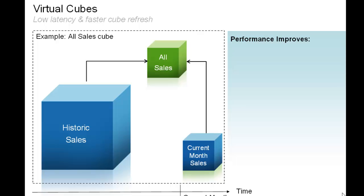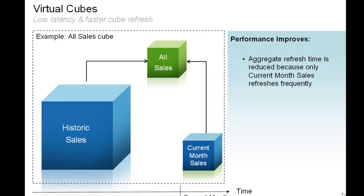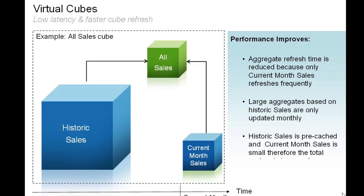Performance is improved because the aggregate refresh time is reduced — most nights only the small aggregates based on current month sales must be refreshed. If you have more granular updates, say every hour or less, you might not use aggregates on current month sales. Large aggregates based on historic sales are only updated monthly. Because query results from historical data are pre-cached and the recent data is small in size, performance for queries run against the sales data of the entire time period is improved.